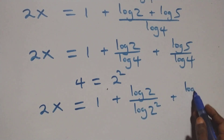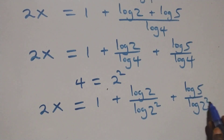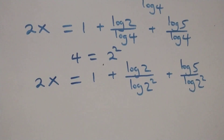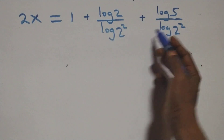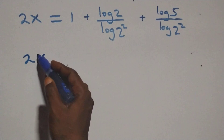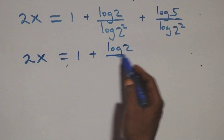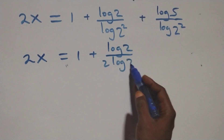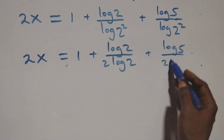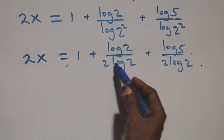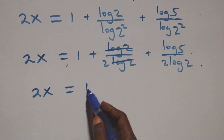Next step: we apply the power rule of logarithm — the 2 comes down — giving 2x equals 1 plus log 2 over 2 log 2 plus log 5 over 2 log 2. The log 2 in the numerator and denominator of the first fraction cancel.